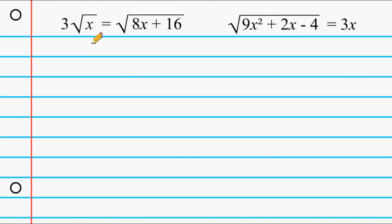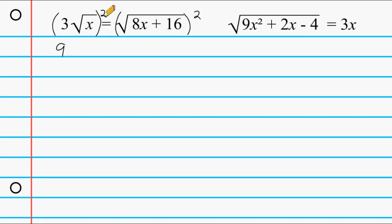This example has a radical on the left and on the right. So we're going to take this entire quantity and square it, and what we do on the left we have to do on the right as well. Notice that this 3 is not underneath the radical symbol, so we have to take 3 and square it, which gives us 9. This exponent of 2 and the square root are going to cancel each other out, leaving us just an x. On the right hand side we cancel out the radical symbol and the exponent of 2, leaving us with 8x plus 16.